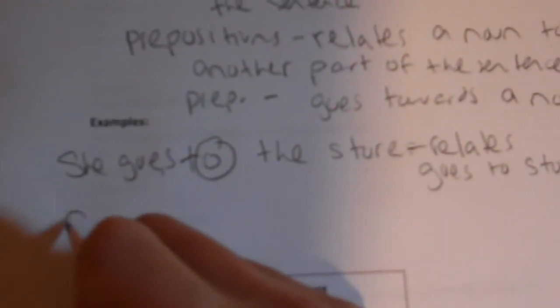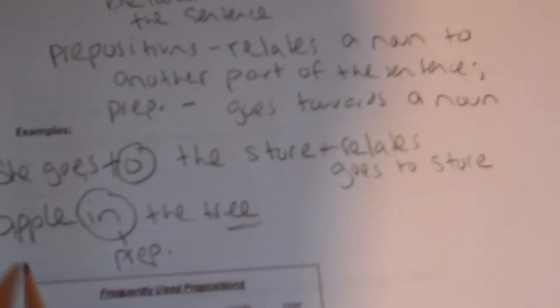Here's another example: 'The apple in the tree.' Here the preposition 'in' is relating the noun 'tree' to the word 'apple' — it's telling you where the apple is. And another example: 'Swam across the ocean.' The preposition 'across' relates 'ocean' to 'swam,' telling you where she swam.